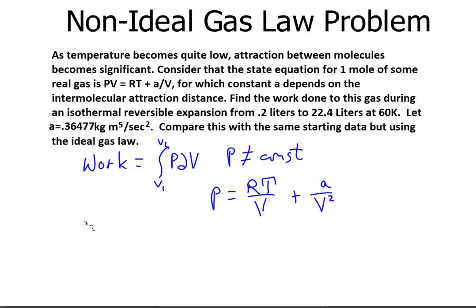provided that we're in equilibrium, and we've already decided we are in equilibrium. So we can say that P is going to be equal to RT over V plus A over V squared. Now, A comes in pretty strange units. It's kilograms meters to the fifth per second squared.